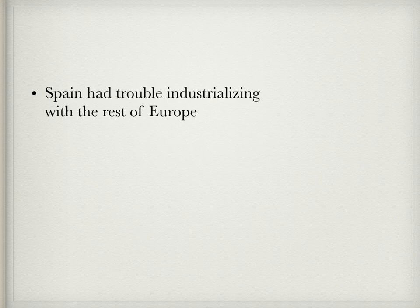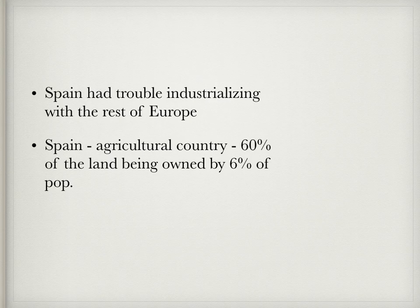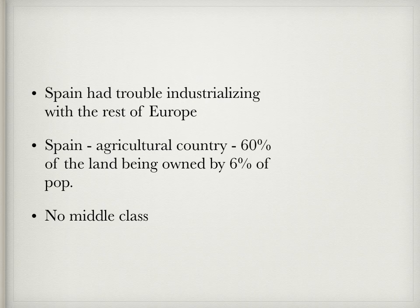But throughout the 19th century, Spain had not been able to industrialize as much as the rest of Europe. Spain was an agricultural country with 60% of the land being owned by 6% of the population. There was no real middle class in Spain. The peasants may have been free, but they did not own their land. So we really do see a big division between the rich and the poor in Spain.